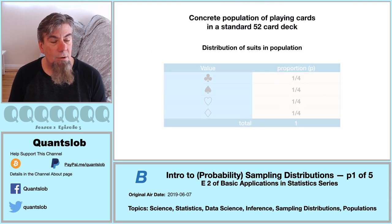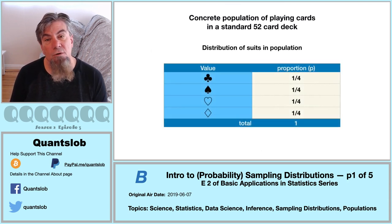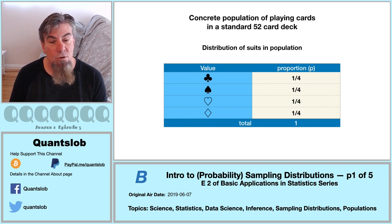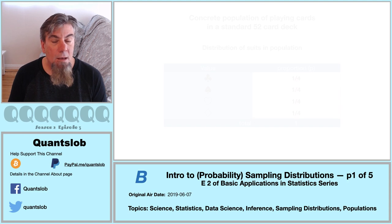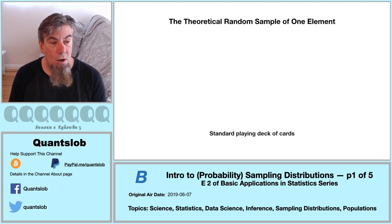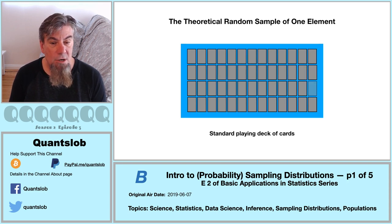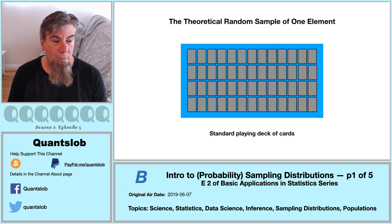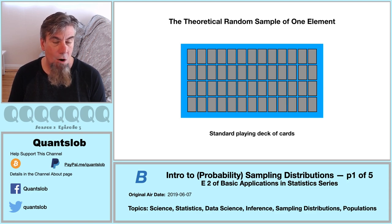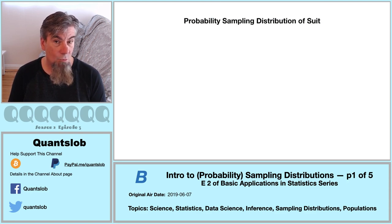We know our distribution of the suit attribute values in the population. As we did previously, we're going to draw a theoretical random sample of one card — a purely imaginary or theoretical undertaking. We never actually select a card, because if we did, there would be no probability associated with that activity: the card we select would simply be the card we select, occurring with certainty.